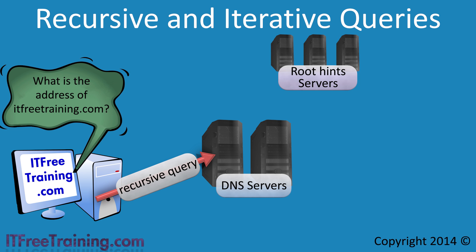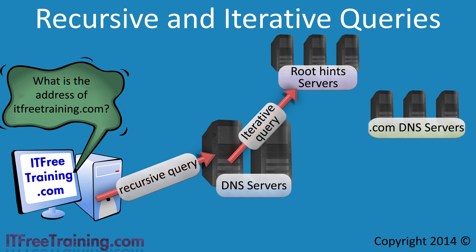This request is different from the first request in that it is an iterative query. An iterative query works like this: if the DNS server does not know the answer but has information that may help resolve the query, it will respond back with this information. In this case, the root hints server does not know how to resolve the address ITFreeTraining.com, but what it does know is the address of a dot com DNS server that may be able to help find the answer.